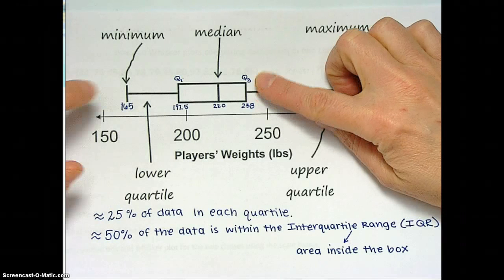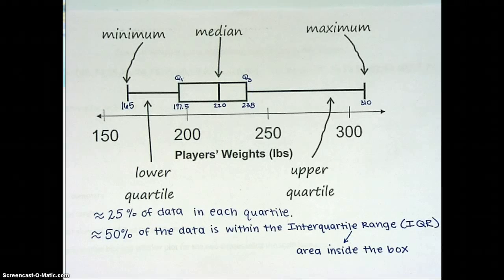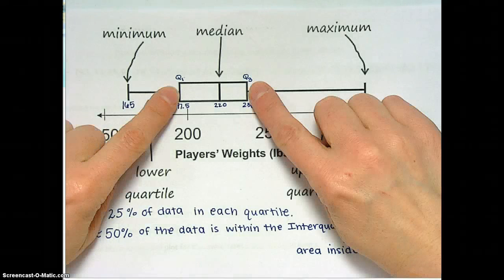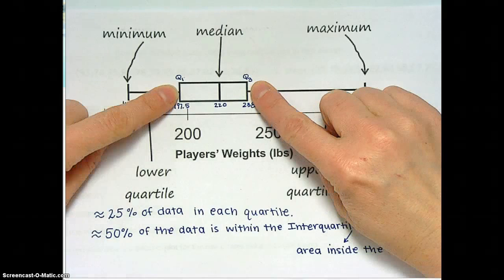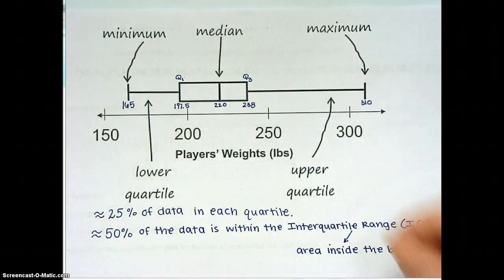These are actually NBA players, so they're tall and lanky, and it's a specific team, but we're not going to get into the data set. Now that you kind of know how to interpret a box and whisker plot, let me ask you a couple other things. If 50% of the men weigh between 197.5 and 238 pounds, is there somewhere else where there's 50% of the men?